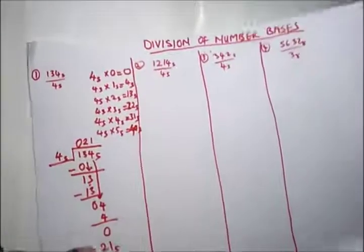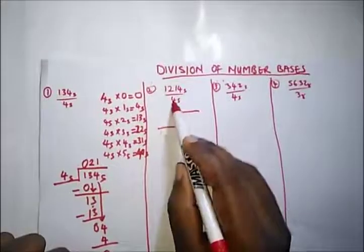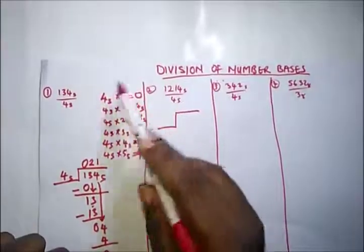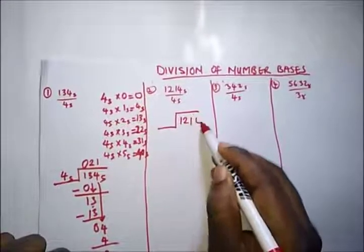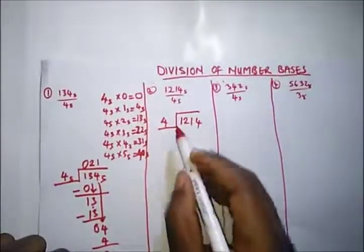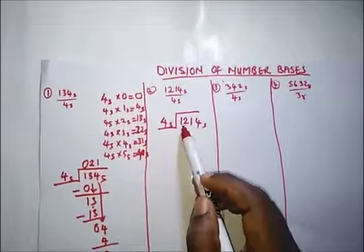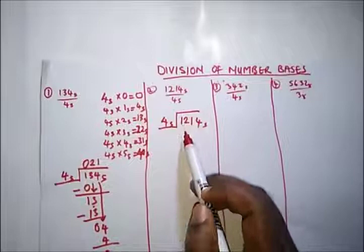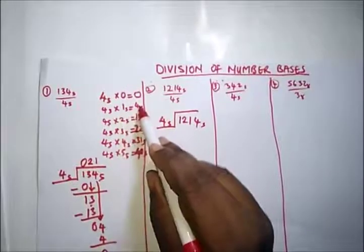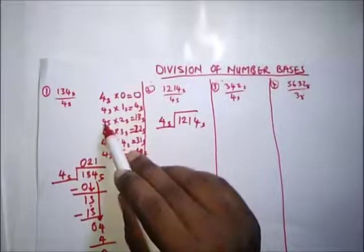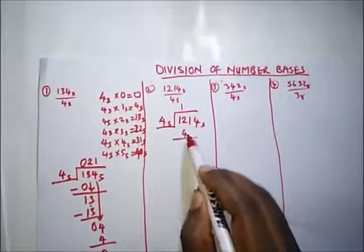Here's another example, still using the multiplication table of 4 base 5. We have 1214 base 5 divided by 4 base 5. 4 into 1 won't go. 4 into 12 base 5: how many times? 1 time, because 4 times 1 is 4 base 5 and 4 times 2 is 13 base 5, which is greater than 12. So we go 1 time. Write 1, subtract — we now need to subtract 4 from 2.